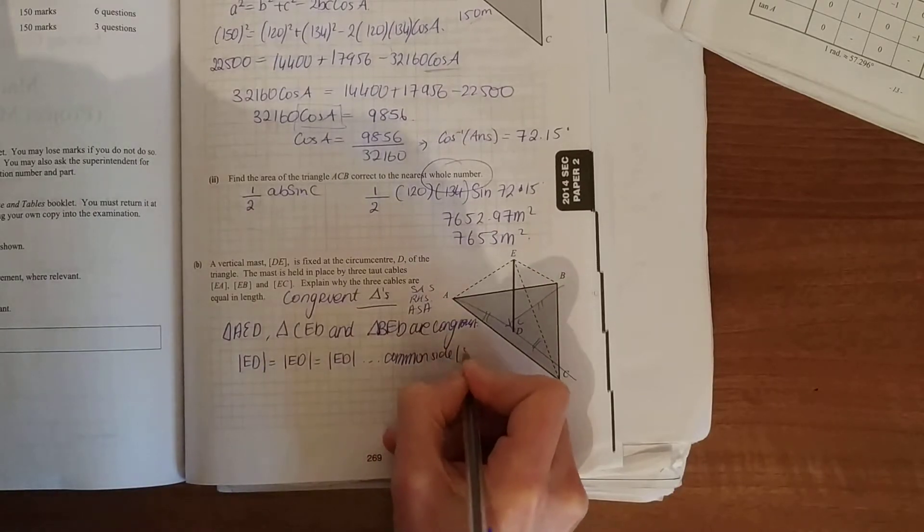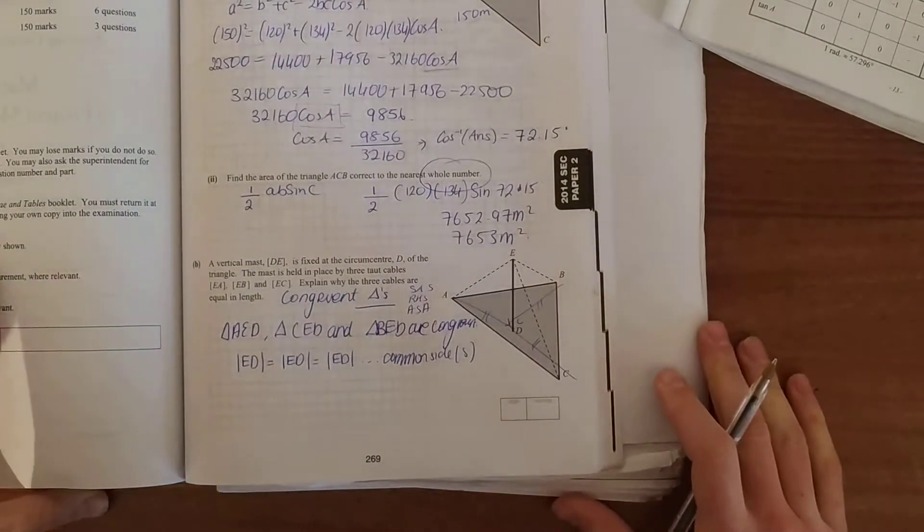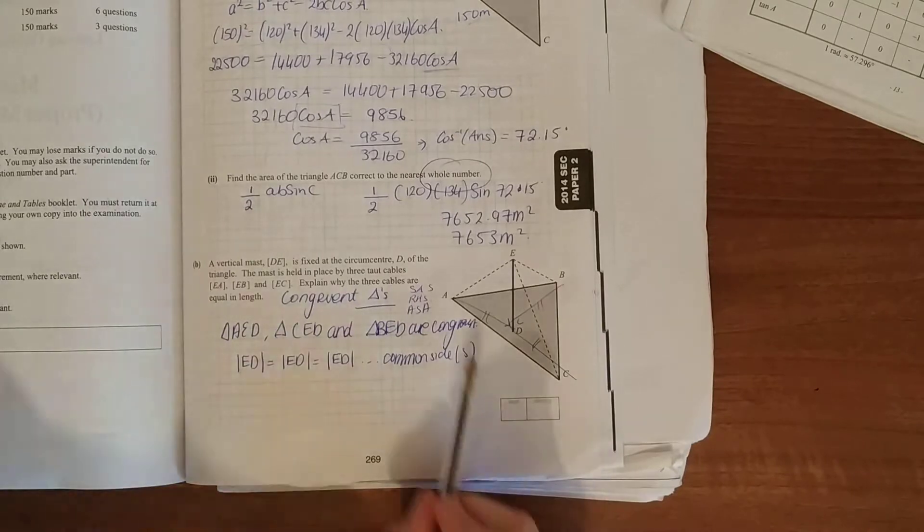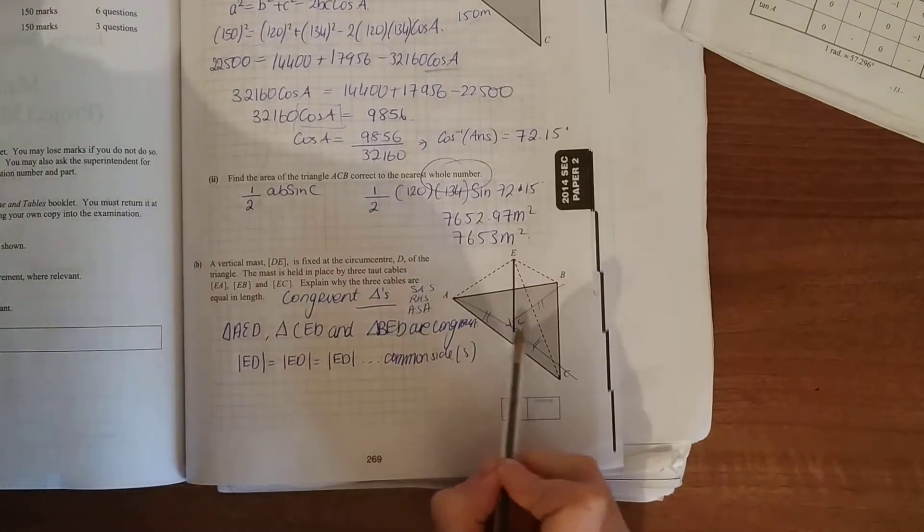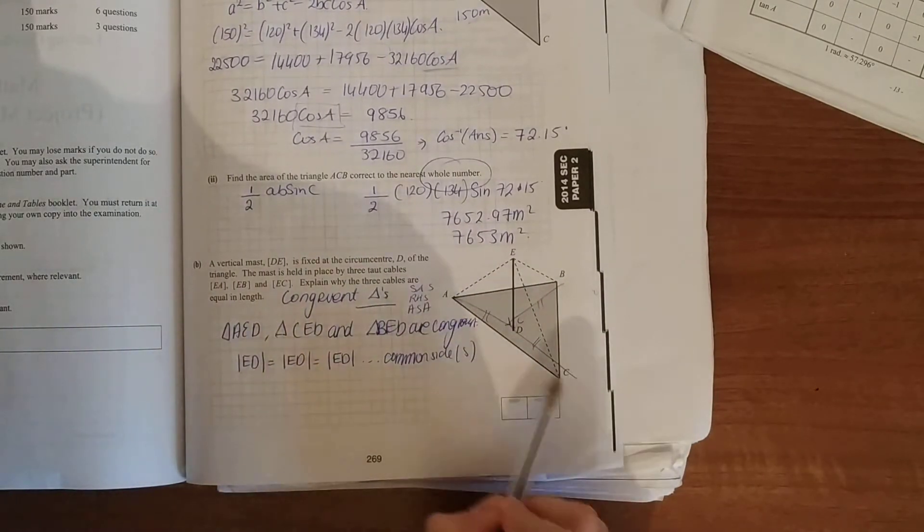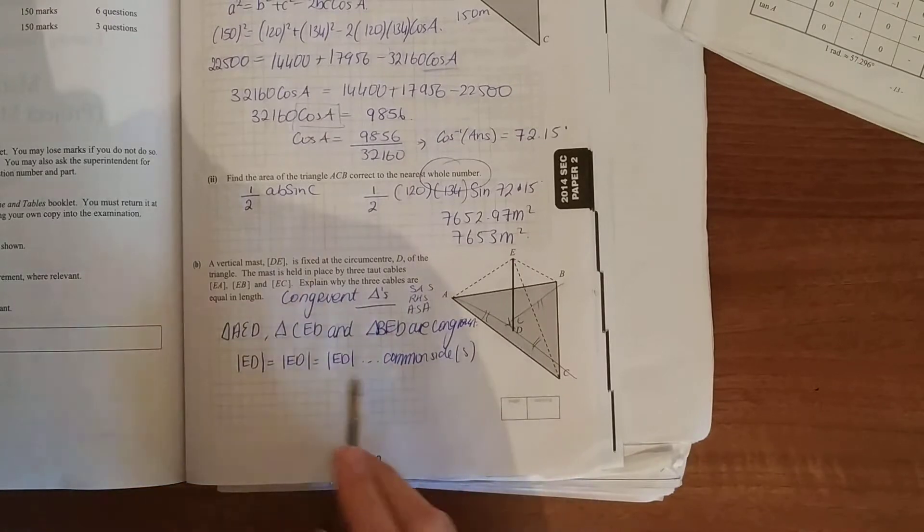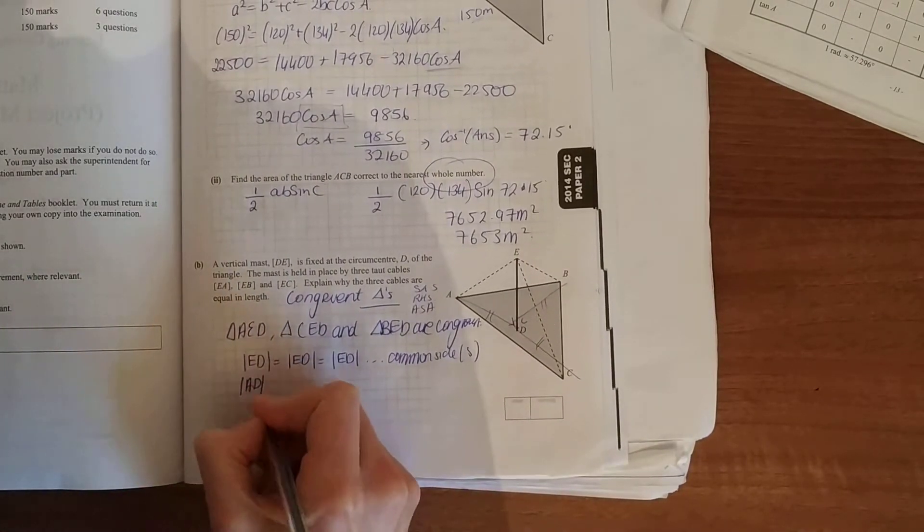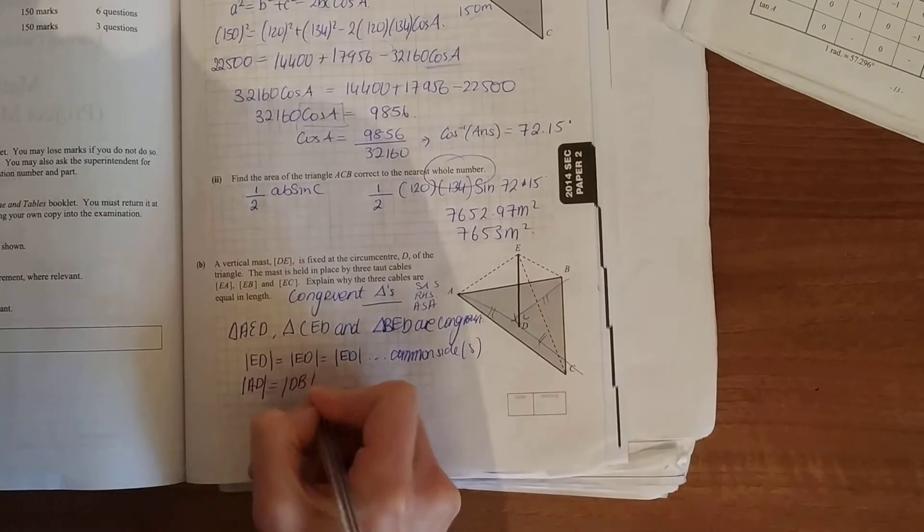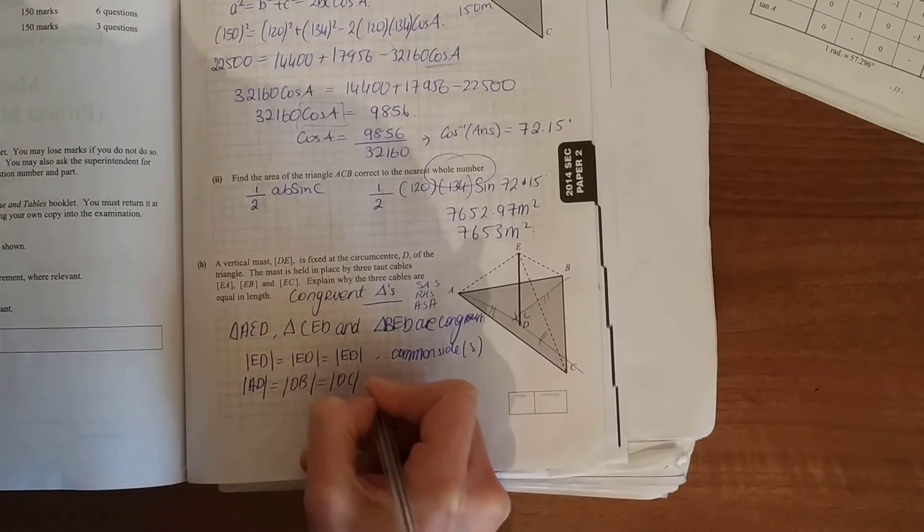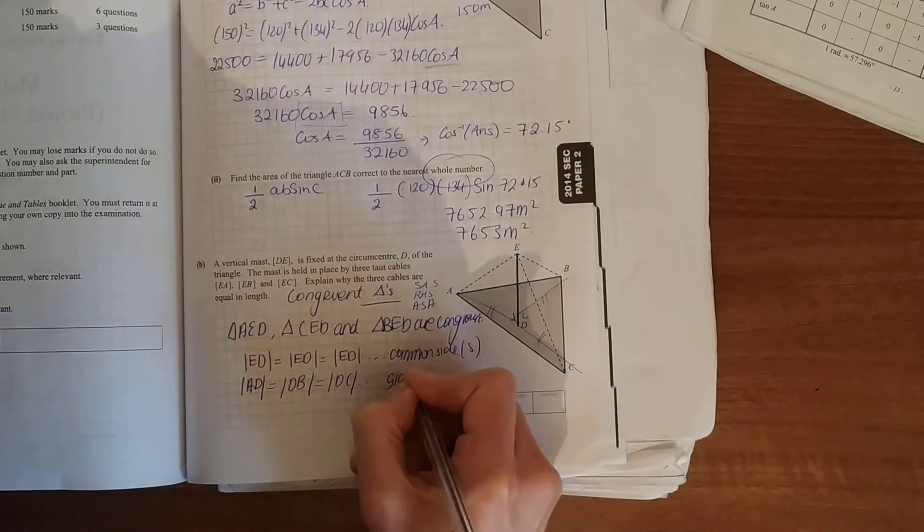Always try to give a few reasons. The next thing here: AD is equal to DB is equal to DC. That's another side, and has to do with your circumcenter.